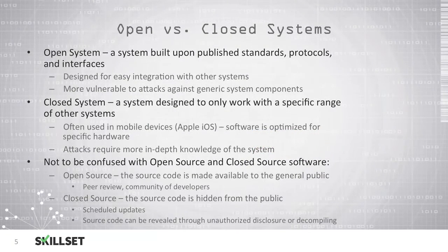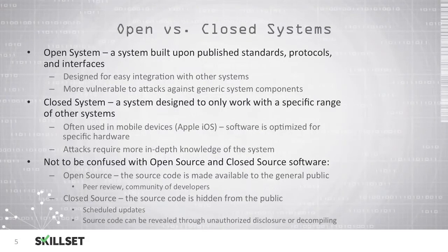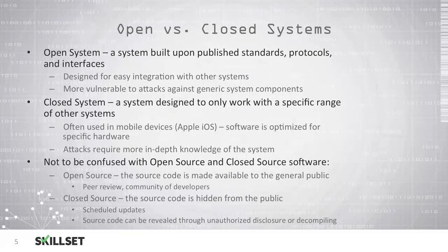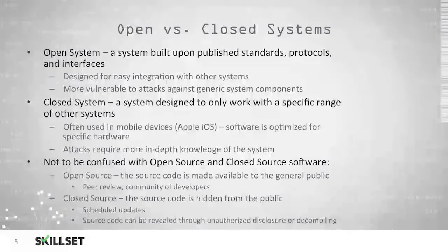We can have two different types of computer systems: open or closed. Open systems are built on published standards, interfaces, and protocols, and are designed to easily integrate with other systems. However, these open systems are typically more vulnerable to attacks because they use generic system components. Closed systems are designed only to work with a very specific range of other systems. This is very common with mobile devices, the example being Apple's iOS software which only runs on very specific hardware, allowing the manufacturer to optimize the software for that specific hardware. In order to attack a closed system, an attacker would need to have much more in-depth knowledge about how the system works.